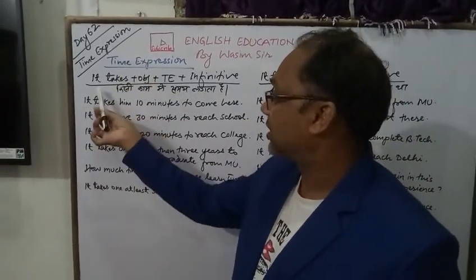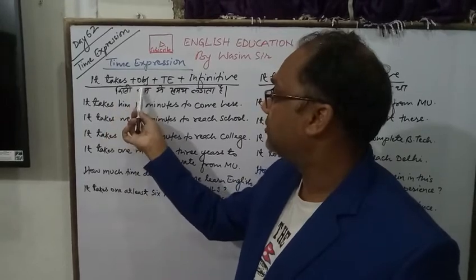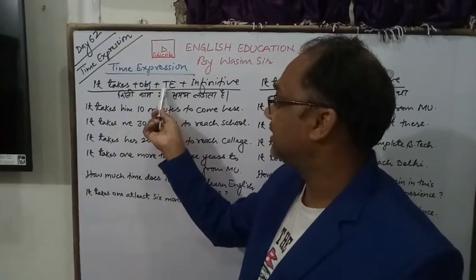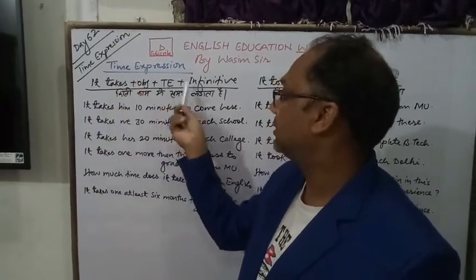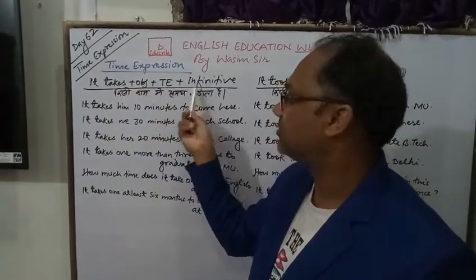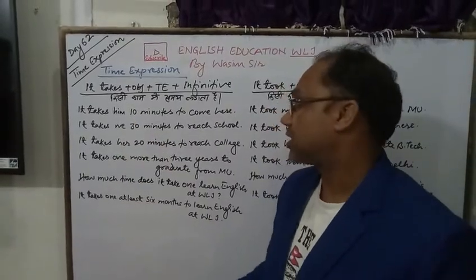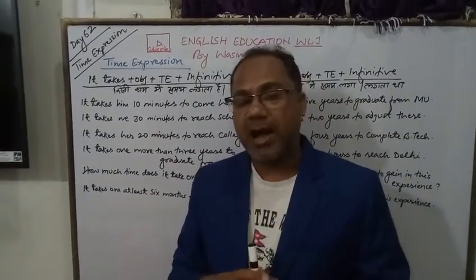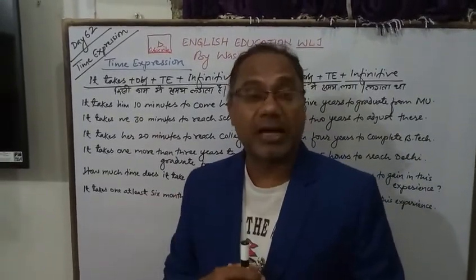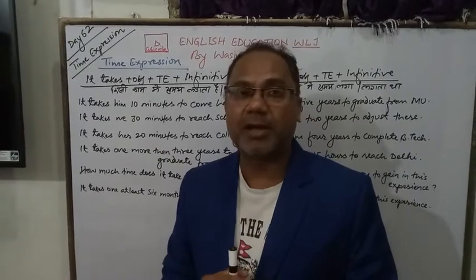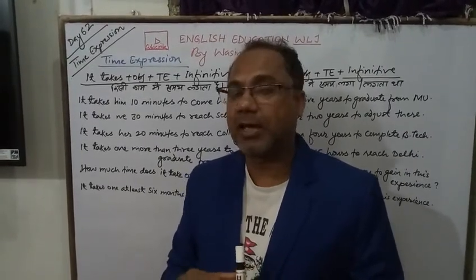The time expression structure is: it takes + object + time + infinitive. We use this structure whenever we have a time of work — for example, the time it takes to do one task or go to work.